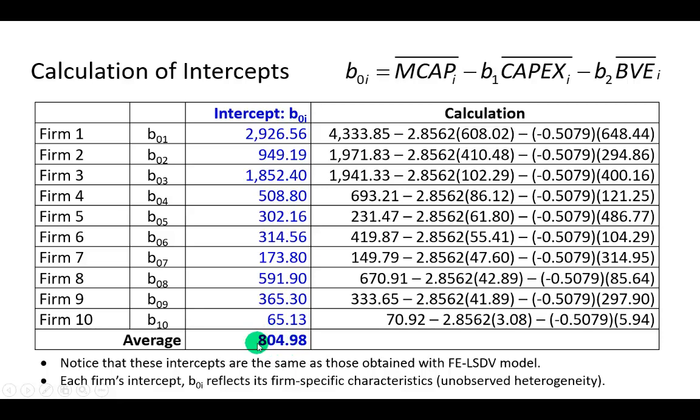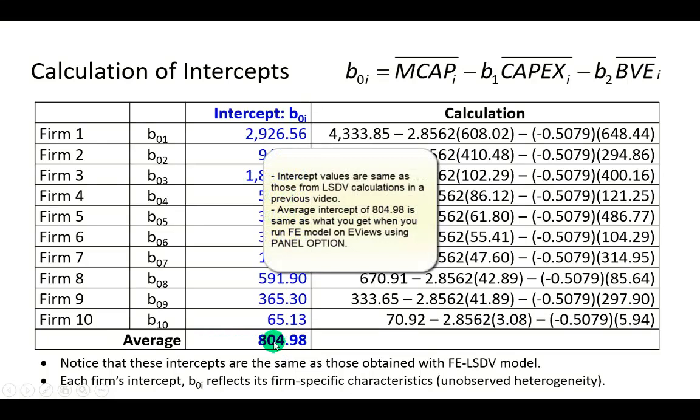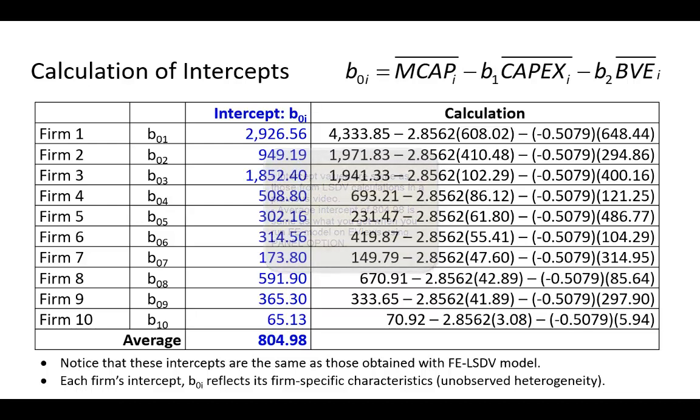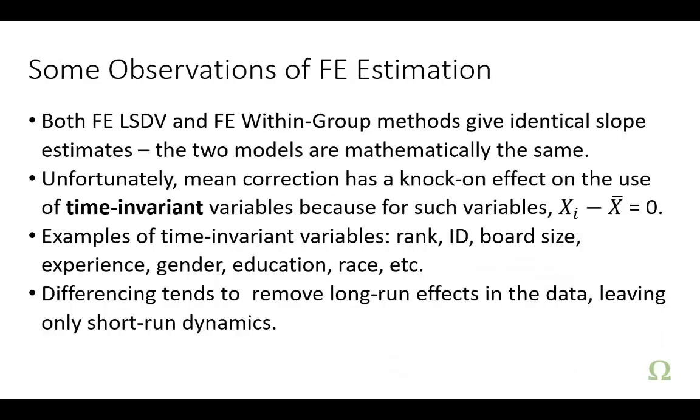Now, remember this value, which is exactly what you would get as the average intercept when you run fixed effects least squares dummy variable model using the panel data option on Excel. And so, in conclusion.